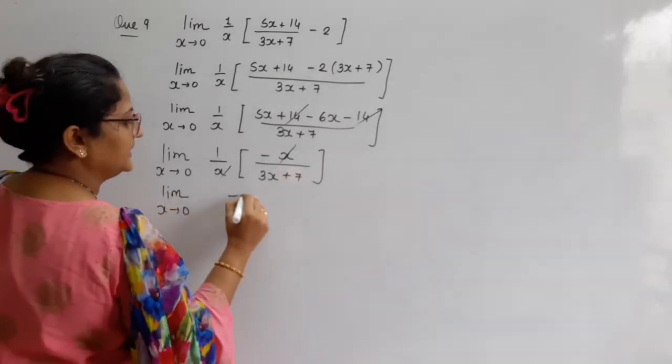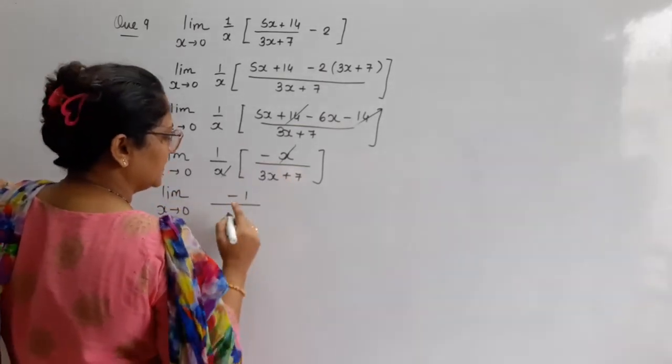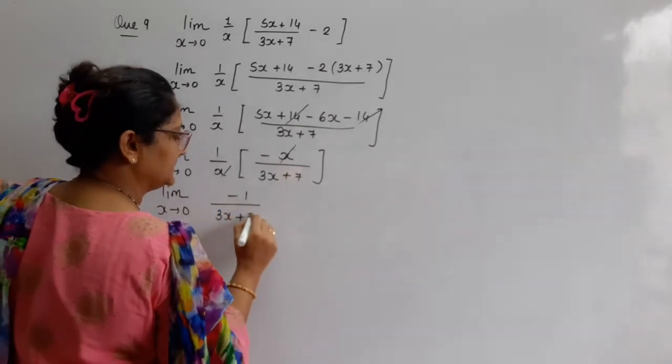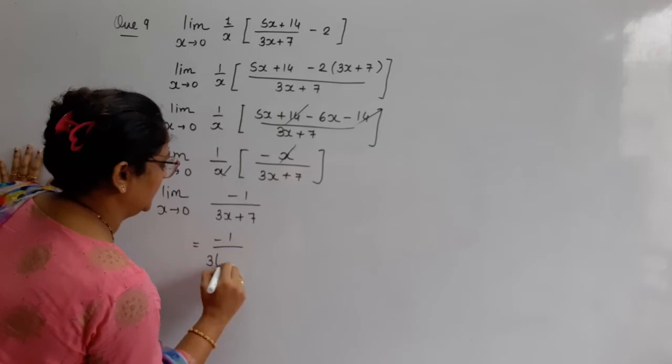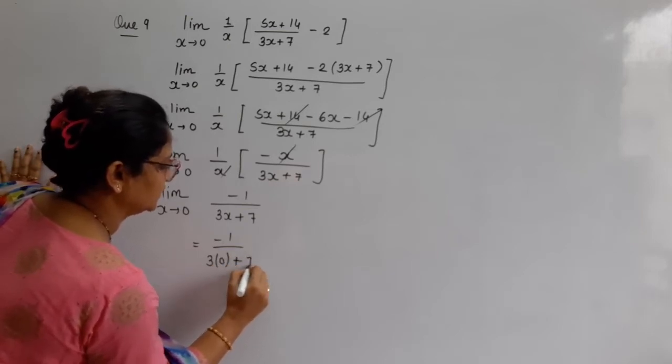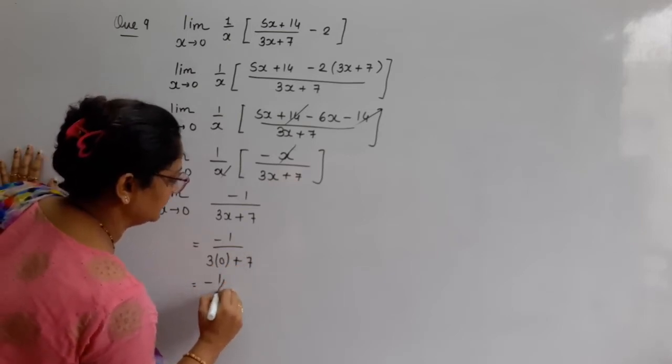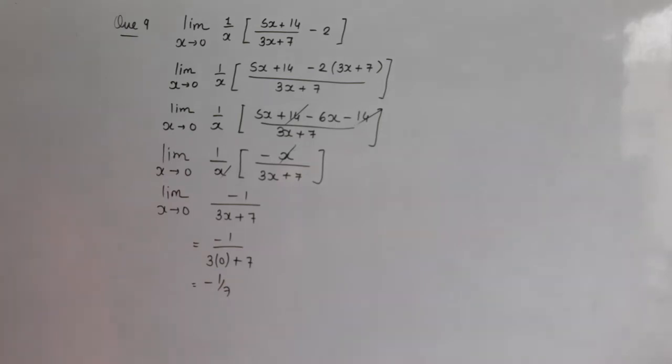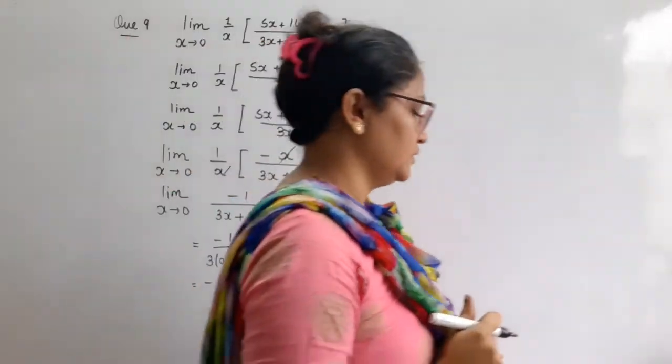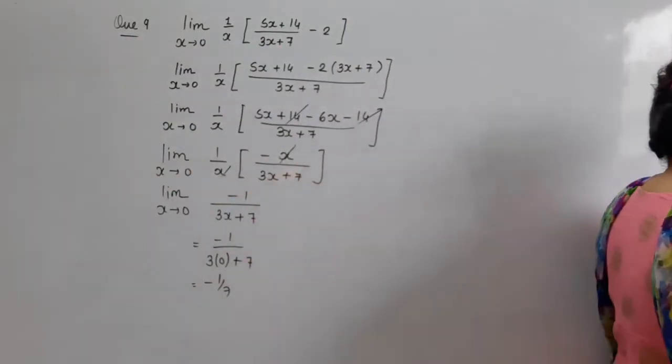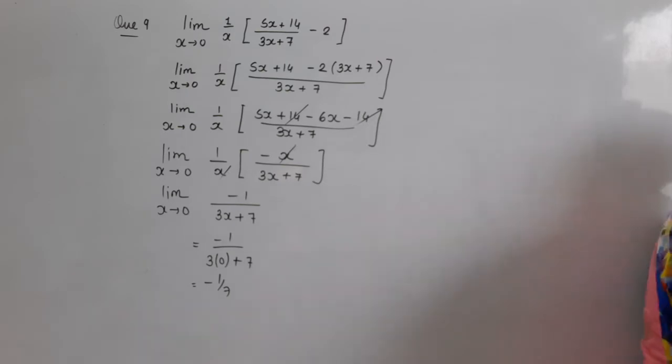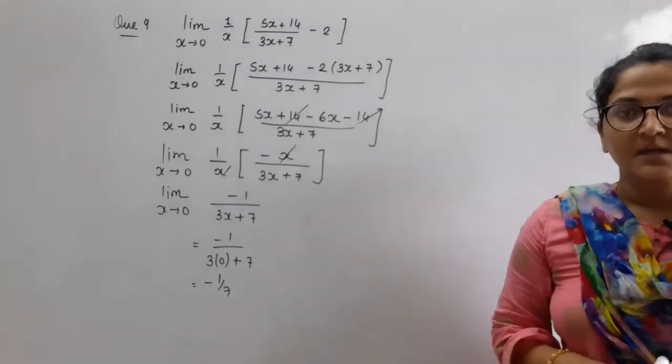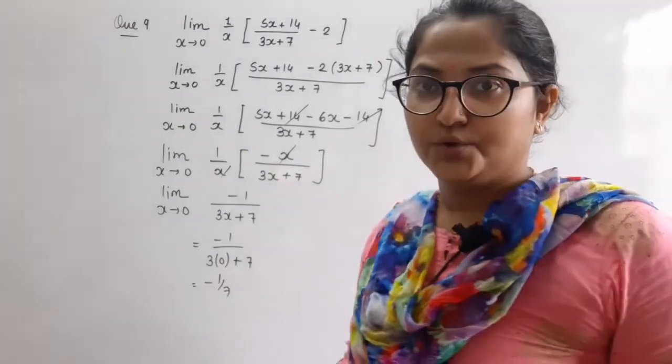So limit x tends to 0. Minus 1 bacha idhar. And 3x plus 7 bacha. Minus 1 by 3. x ki value rakho, 0. 7. Final answer will be minus 1 upon 7. Hope so you are getting me. Samajh me a raha hoga aapko. Questions ke answers kaafi easy hai. Kuch bhi isme tough level nahi hai. Clear? Then let's move into the new question. Question number 10.